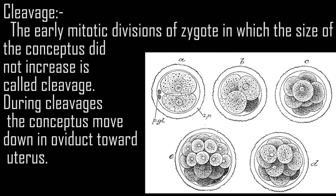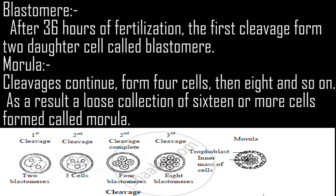Cleavage: The early mitotic divisions of the zygote in which the size of the conceptus does not increase are called cleavage. During cleavage, the conceptus moves down the oviduct toward the uterus. After 36 hours of fertilization, the first cleavage forms two daughter cells called blastomeres.